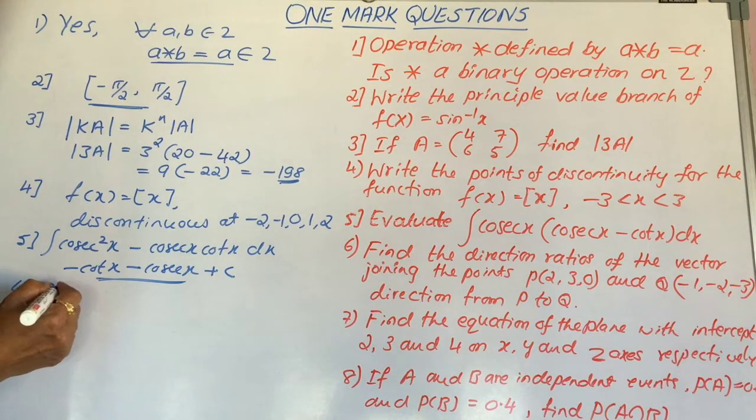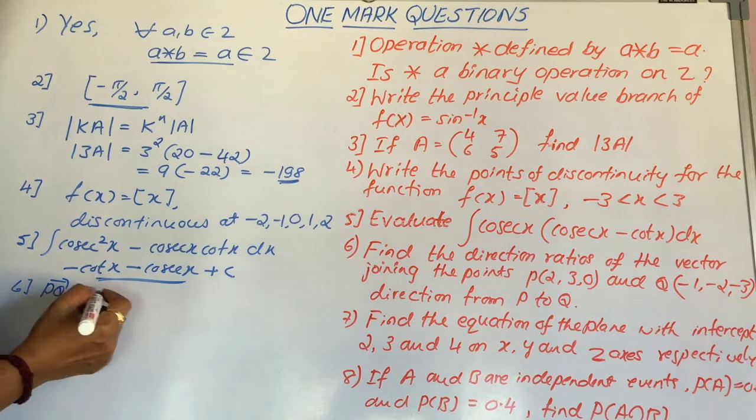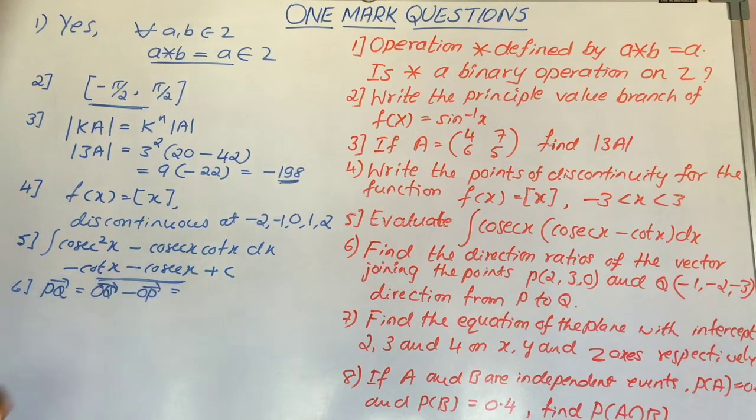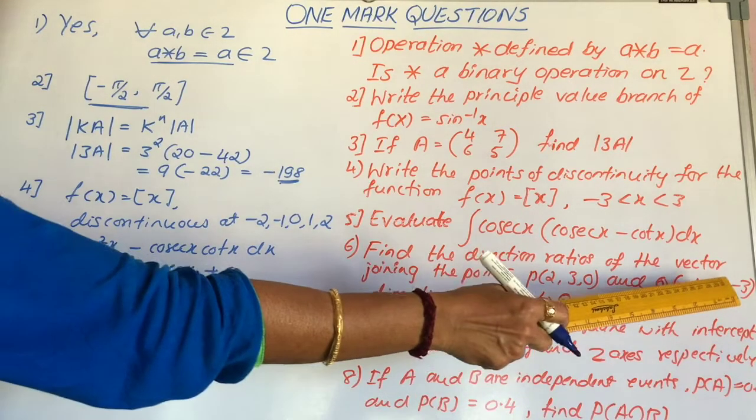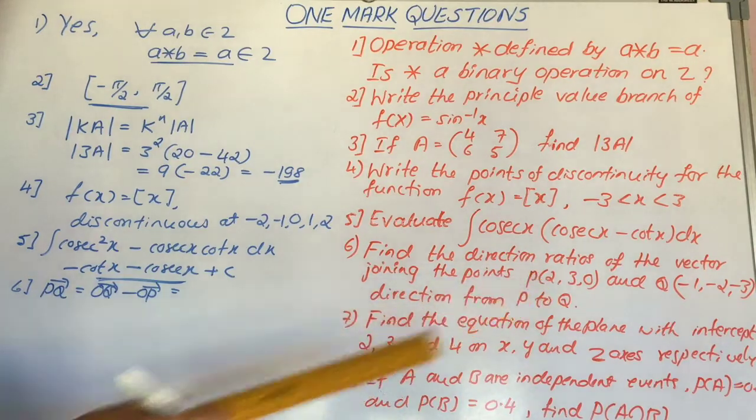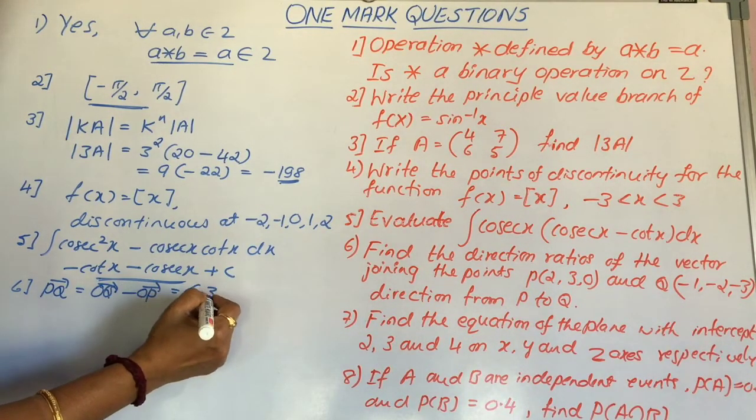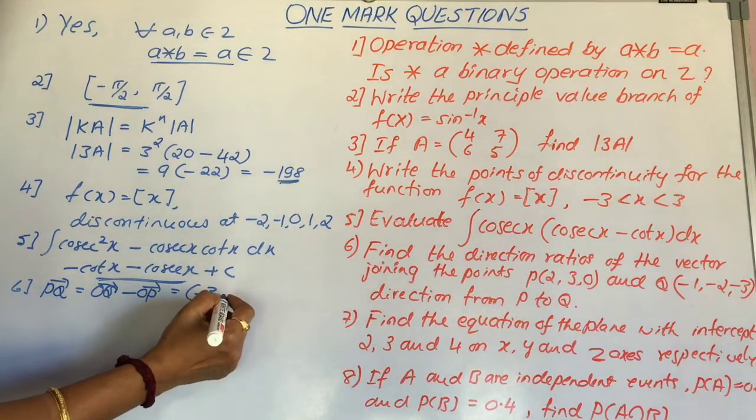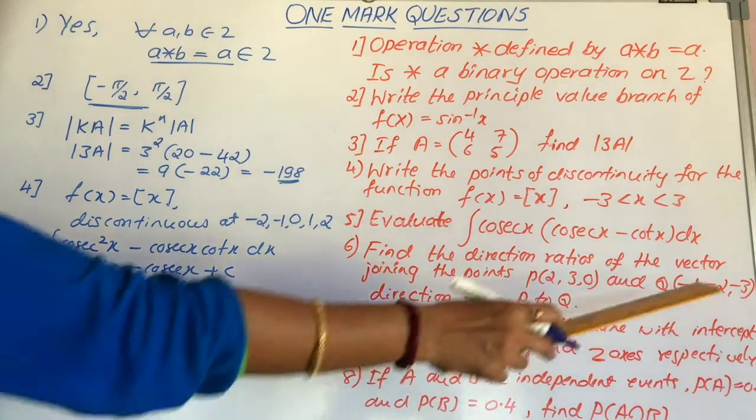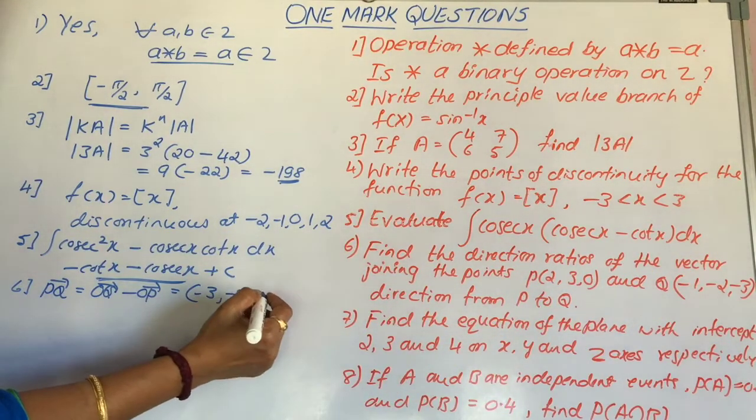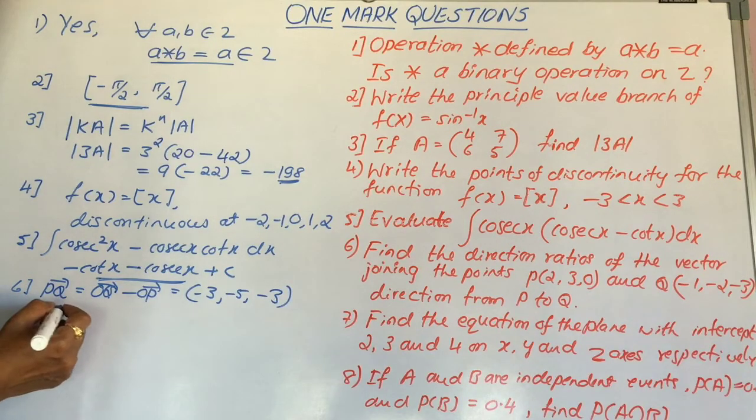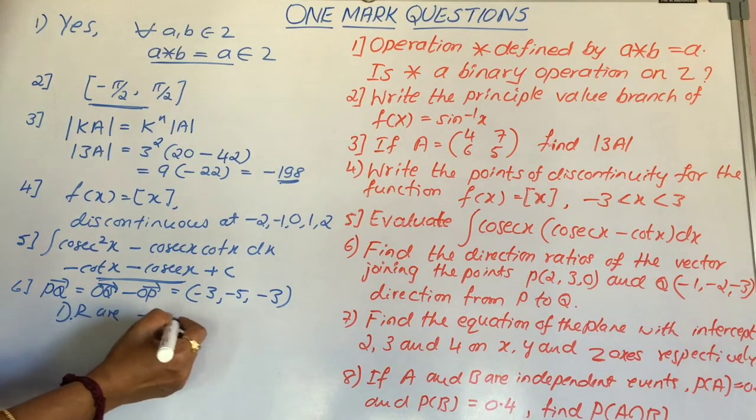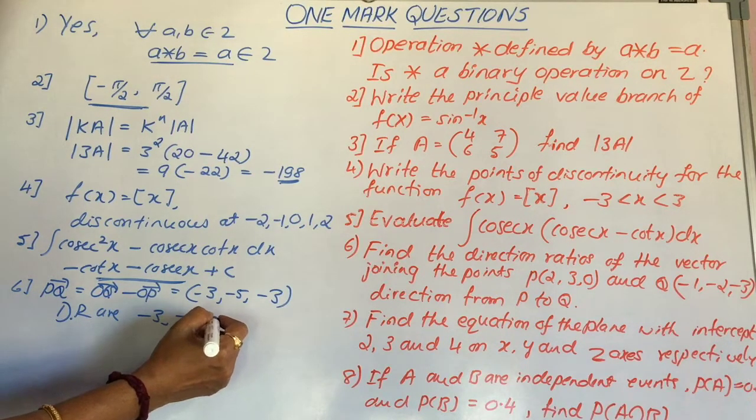So, first let us consider the vector pq that is actually oq minus op. That is minus 1 minus 2, minus 2 minus 3, minus 3 minus 0, which becomes minus 3, minus 5, minus 3. Therefore, the direction ratios are minus 3, minus 5 and minus 3.